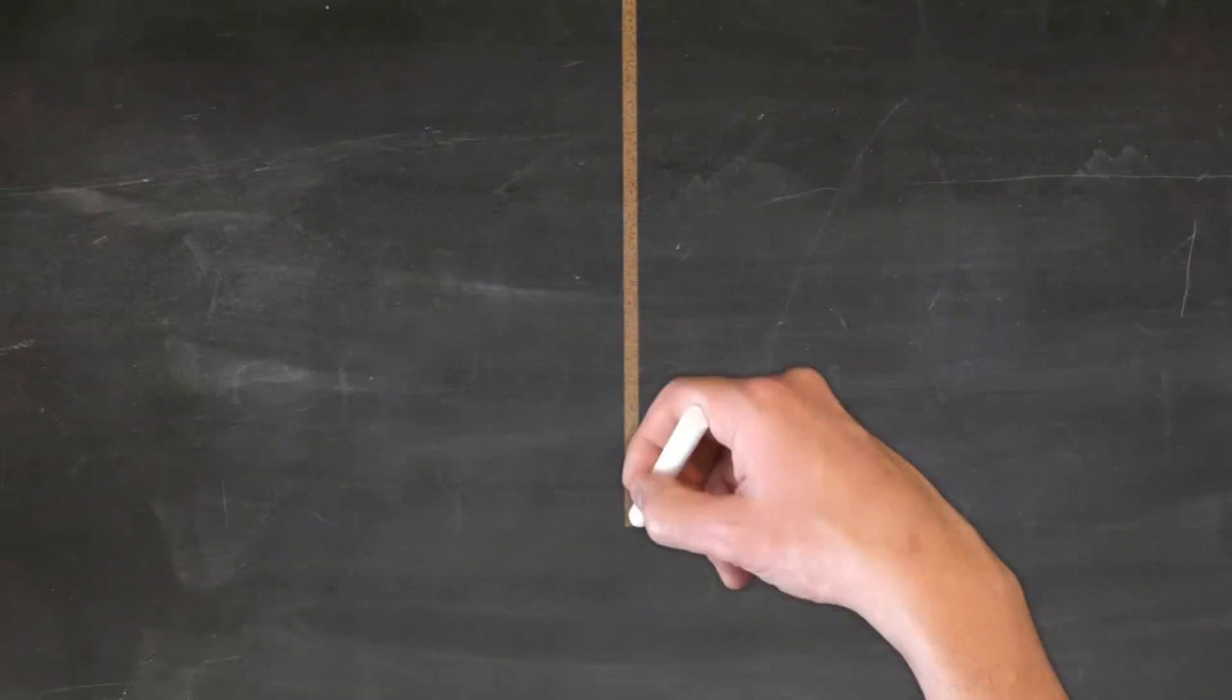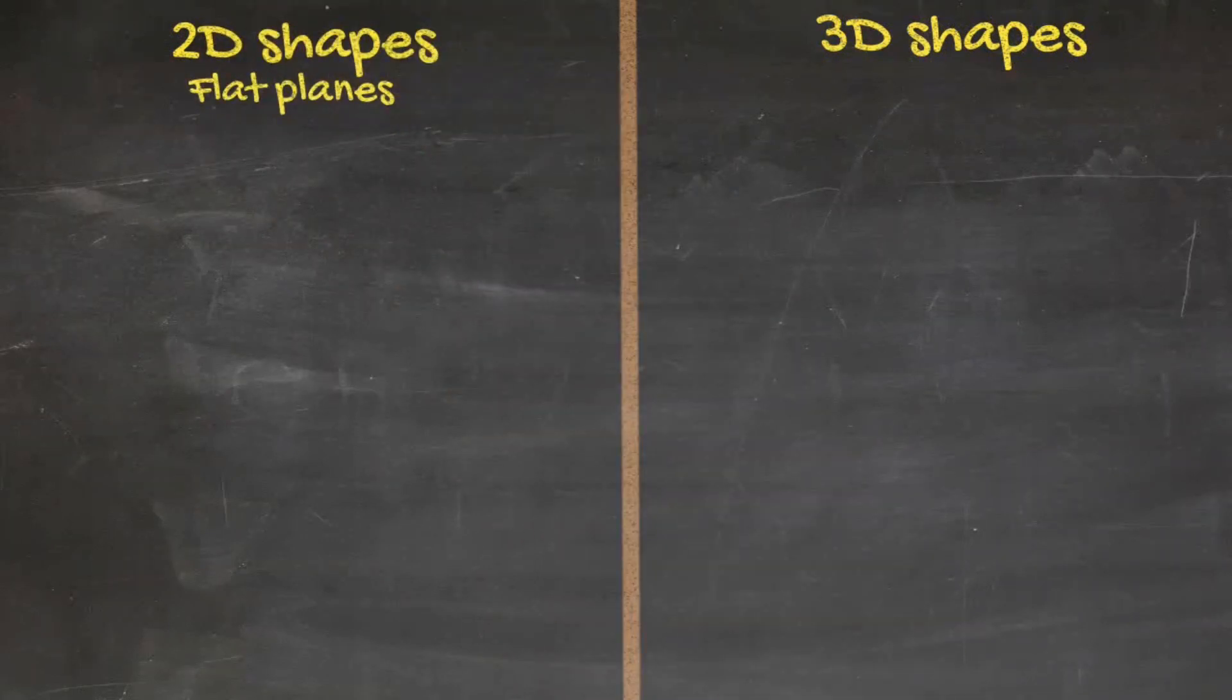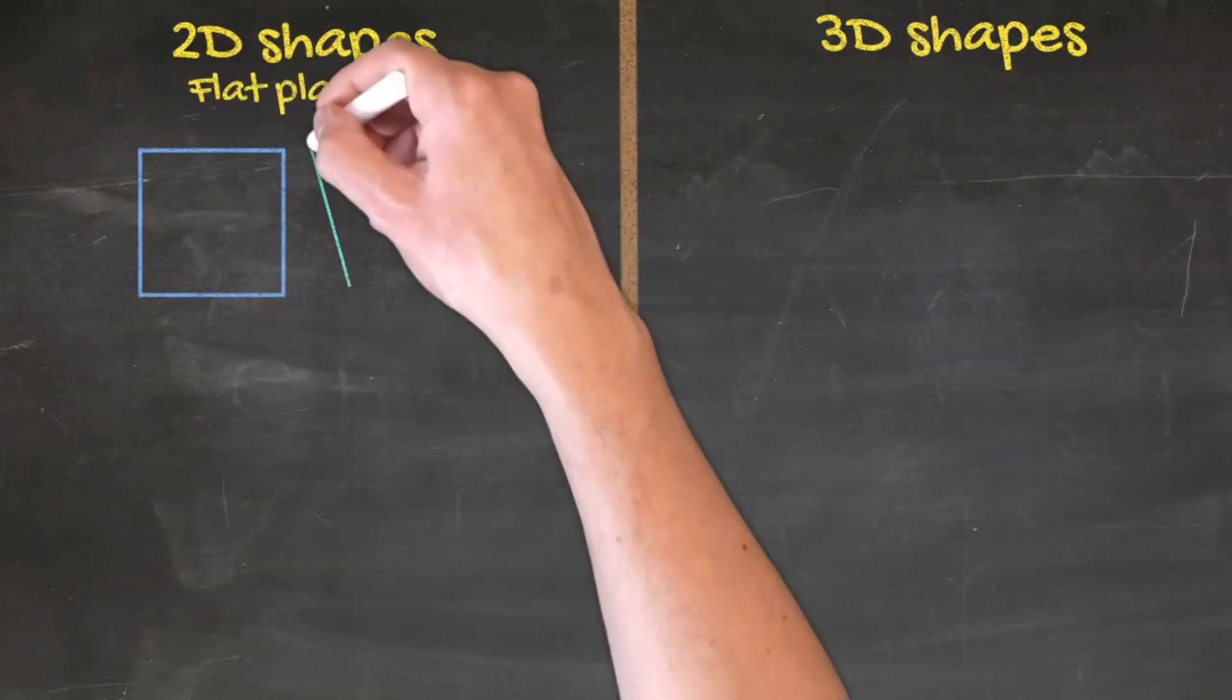Of course, an introduction to geometry would not be complete without a brief explanation of 2D shapes and 3D shapes. 2D shapes may be seen as figures with two dimensions or flat planes. Some examples include this square, this triangle, and this circle.